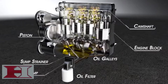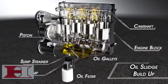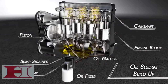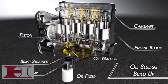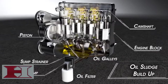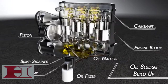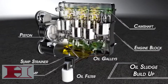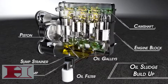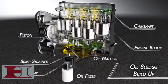When your engine is running, oil is picked up from the oil pan through the sump strainer, pumped through the oil pump and passes through the oil filter. It is pumped through oil galleys in the engine block to moving parts inside the engine where it lubricates and cools components including the camshaft and pistons.